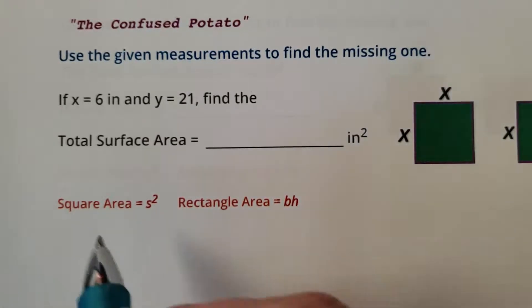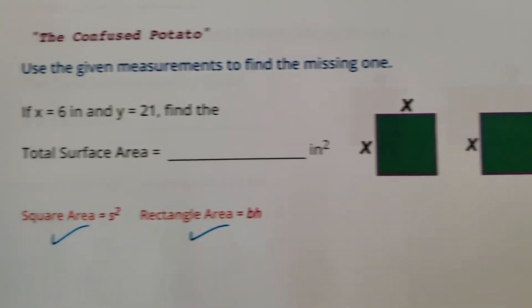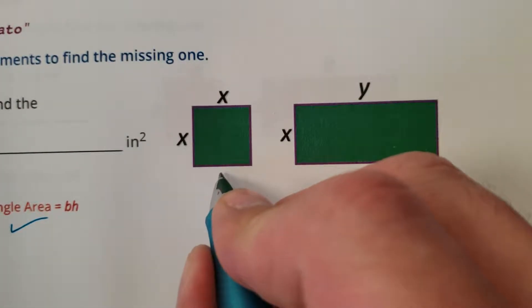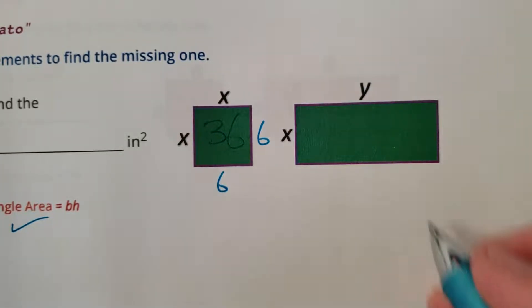All right, so if X is 6 and Y is 21, that means this square is a 6 by 6 square, which means it has an area of 36.